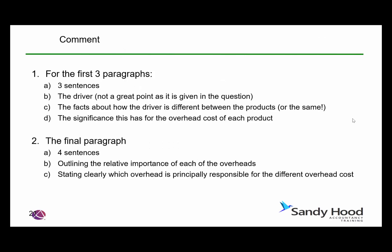So what do we do? We have three sentences basically in each paragraph. We tell the examiner what the driver was — which we'd already been told in the question. But then we take it further: we explain the facts of how the driver differs between the two products, or in the case of property costs, how it's the same. And then we explain the significance this has for the overhead cost of each product. The final paragraph has four sentences outlining the relative importance of each driver and stating clearly which overhead is principally responsible for the difference in overhead cost between the two units.